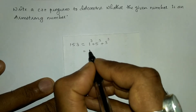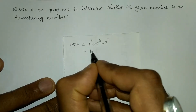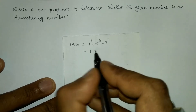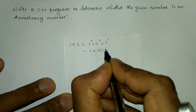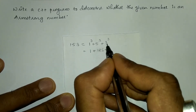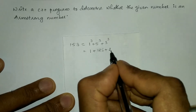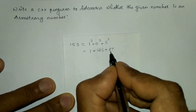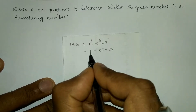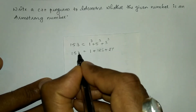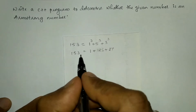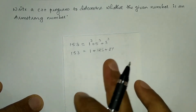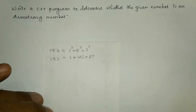For example, one cube: 1×1×1 gives us 1. Plus five cube: 5×5×5 = 125. Plus three cube: 3×3×3 = 27. So 125 plus 27 is 152, plus 1 is 153. We get the same number back. Such numbers are called Armstrong numbers. If it is not, then it is not an Armstrong number.